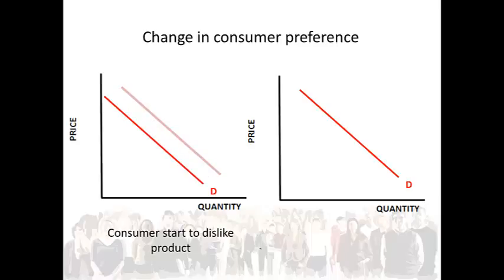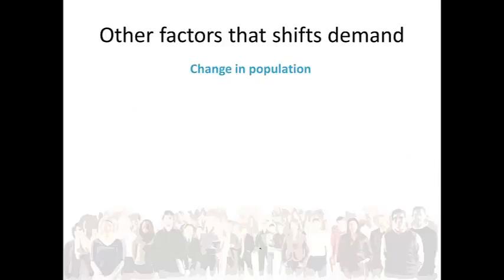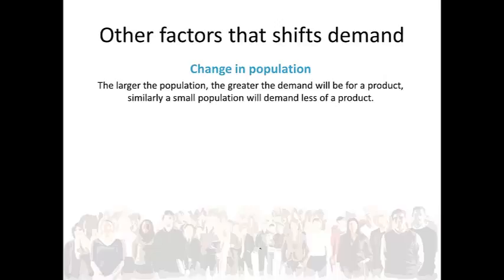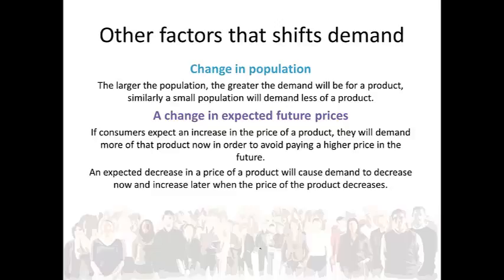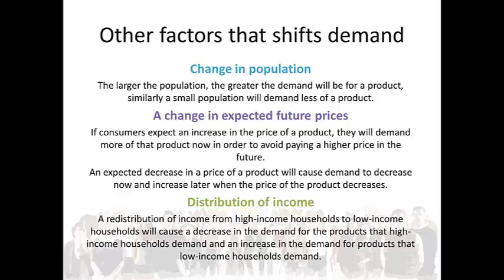If a consumer starts to like a product more — for example, they saw an advertisement and like the product — they will start buying more of it, causing a rightward shift of the demand curve. Changes in population can also shift the demand curve: the larger the population, the greater the demand will be for a product; similarly, a smaller population will demand less. Changes in expected future prices of a product will influence demand today. If a consumer expects an increase in the price of a product, they will demand more of it now to avoid paying a higher price in the future. An expected decrease in price will cause demand to decrease now and increase later when the price drops. The distribution of income also has an influence on the demand curve — a redistribution of income from high-income households to low-income households will cause a decrease in demand for products that high-income households demand and an increase in demand for products that low-income households demand.